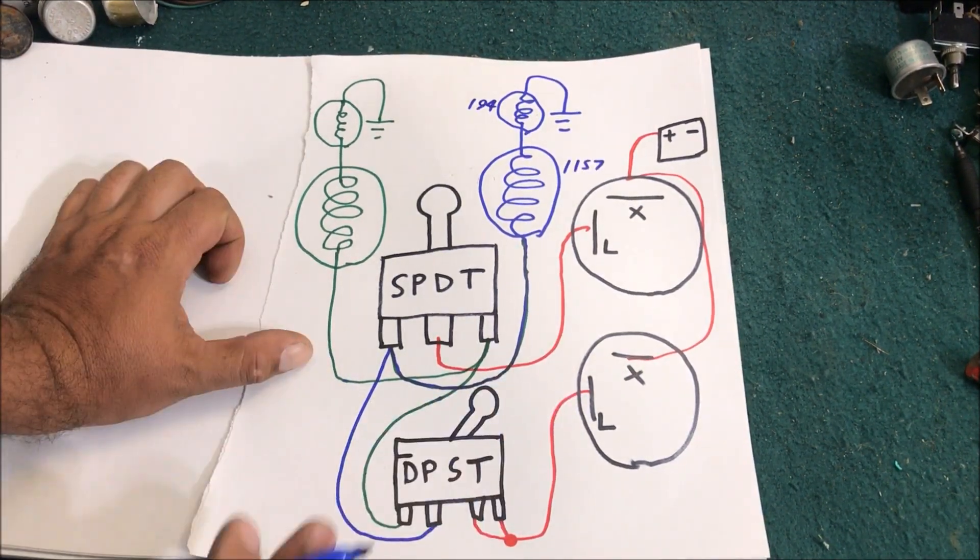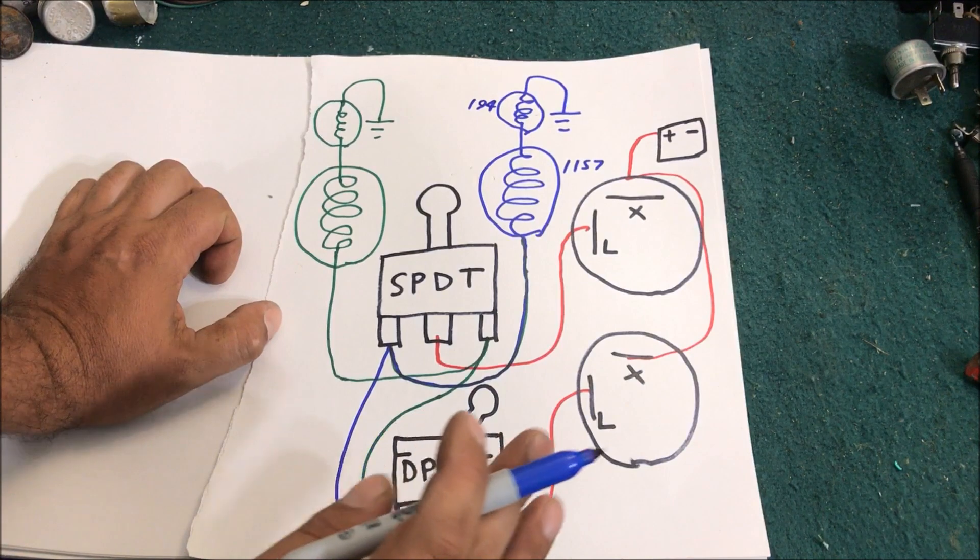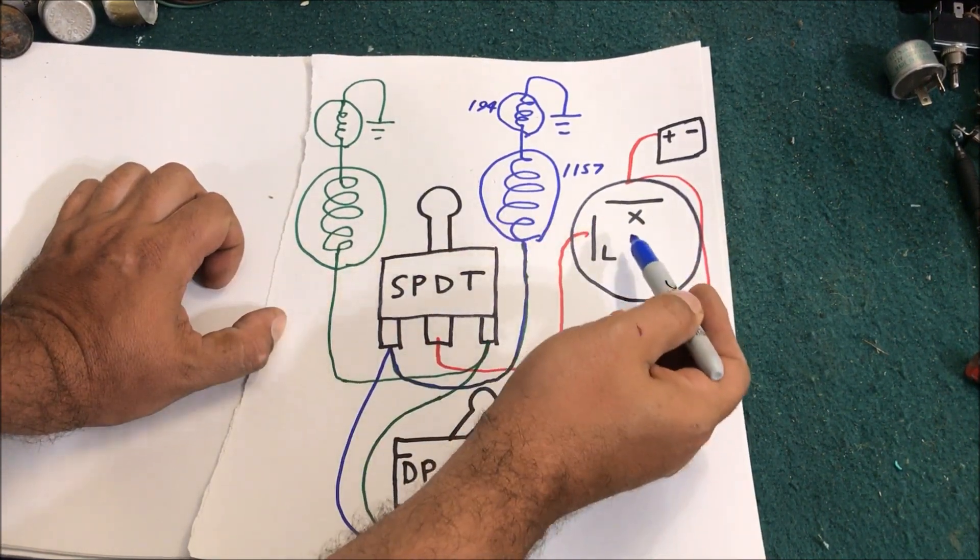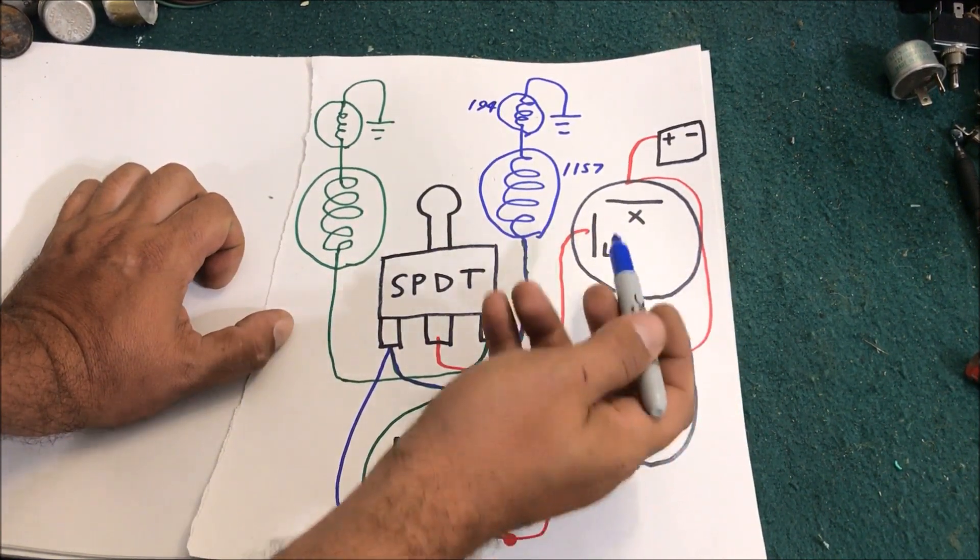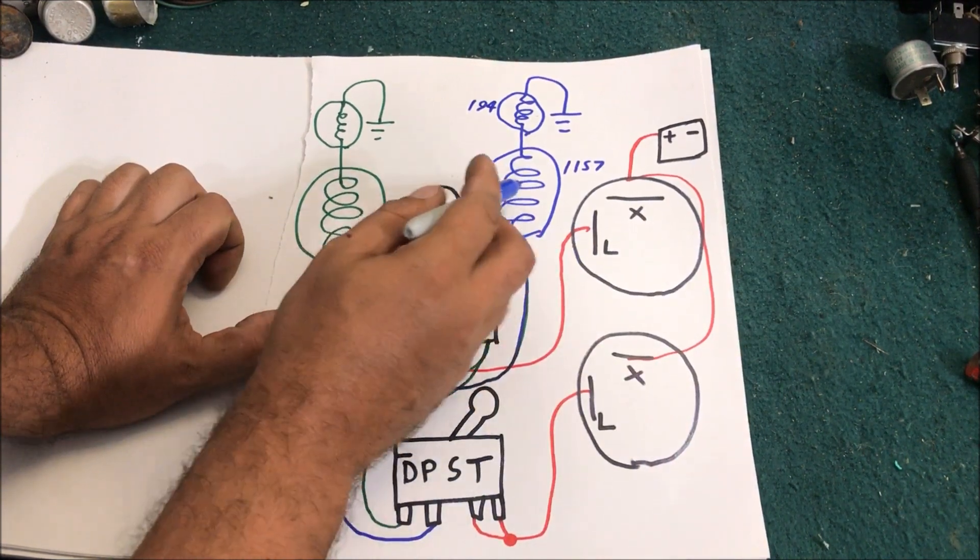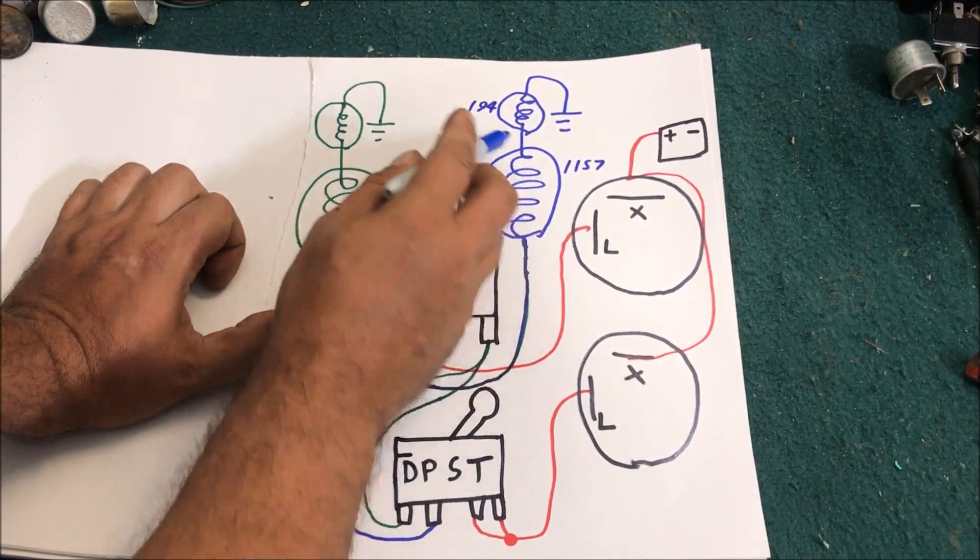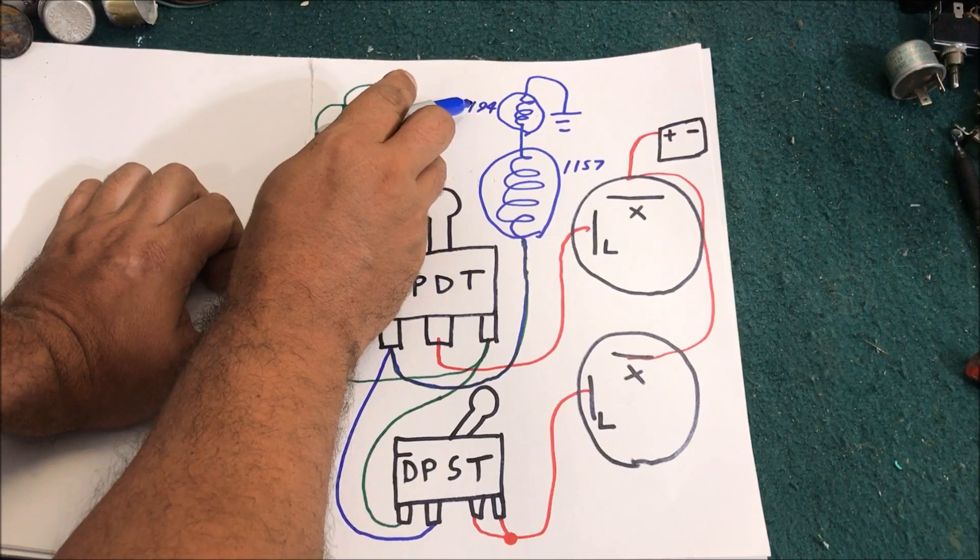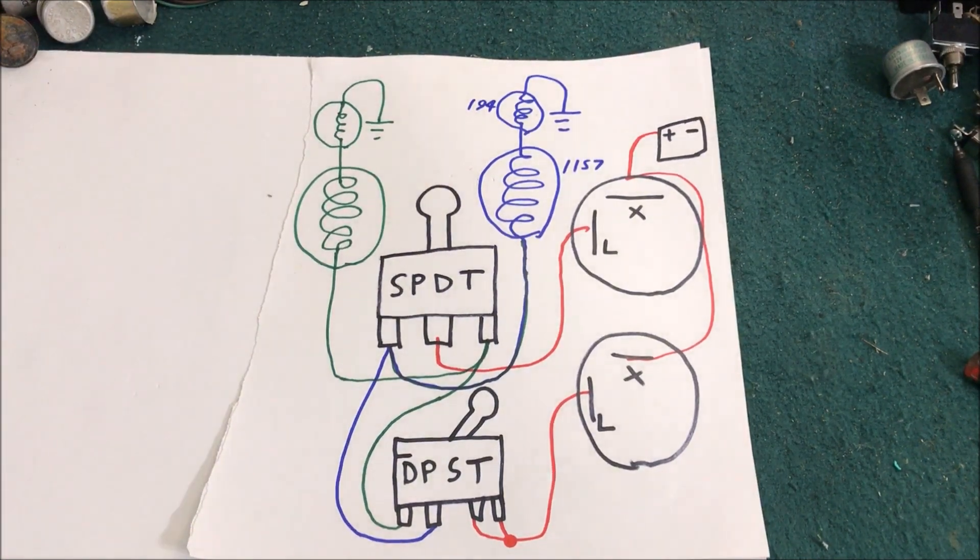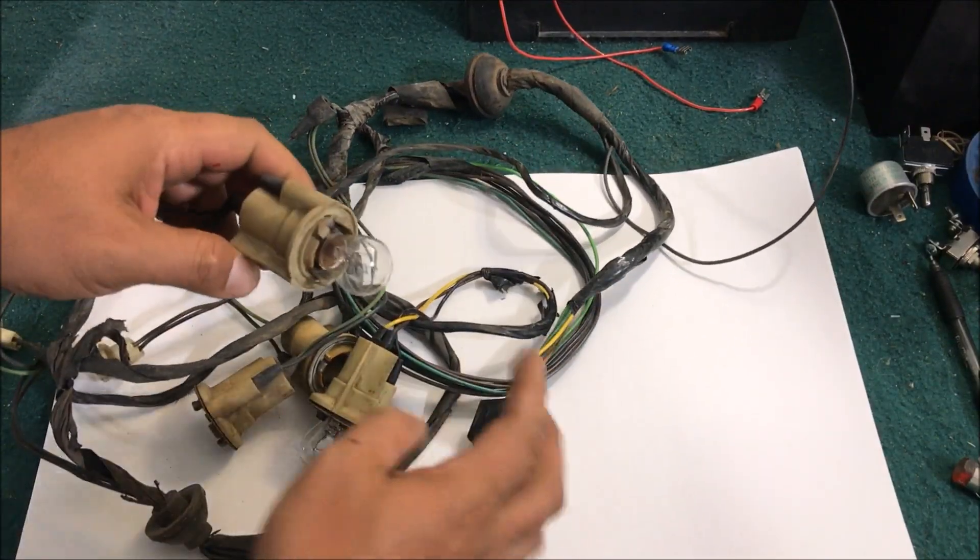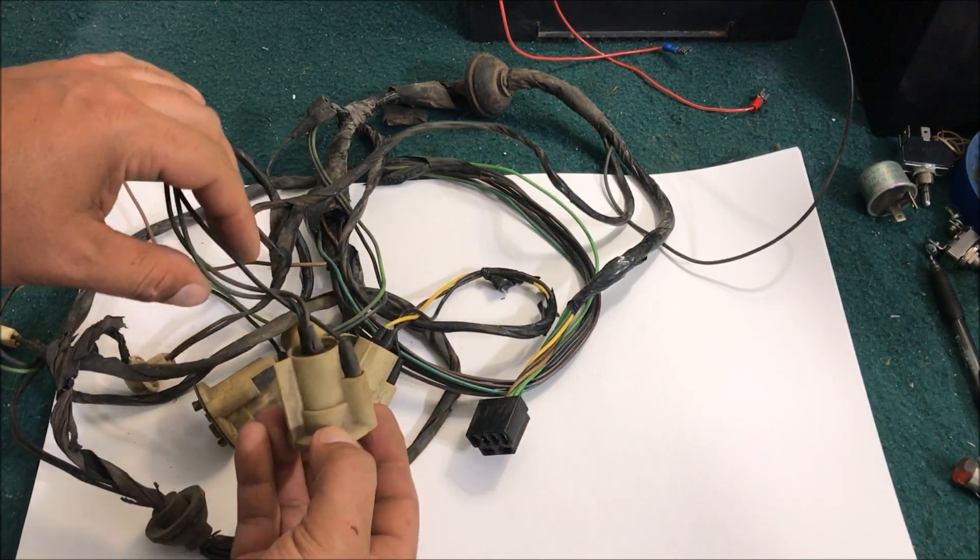Okay, so that's the basic wiring diagram to add signals and hazards. Just remember that each flasher can only do about six or seven bulbs. So typically cars have four 1157s and two or three or four 194s, so let's keep that in mind. Okay, so this is a taillight harness for '71 or '72 Chevelle.